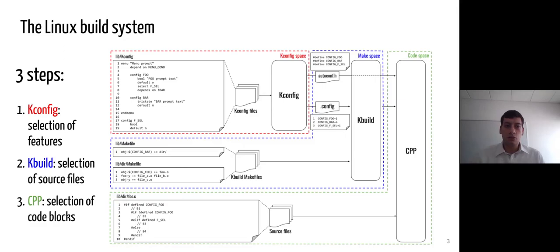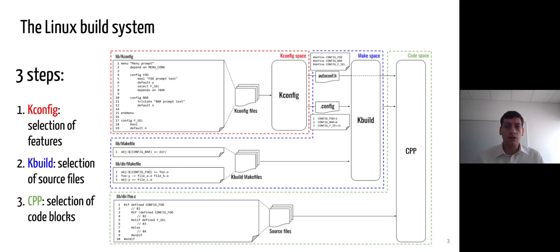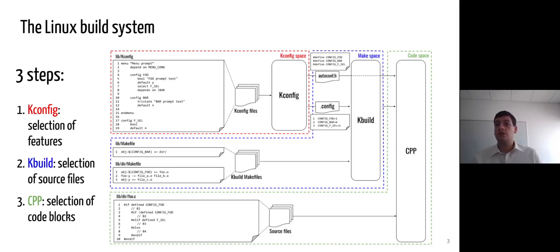The first one is called kbuild, which consists in make files selecting source files, and the second one, the C preprocessor, which selects code blocks in these files. In each one of these three steps, conditions and features are defined to select the different assets — for example, source files in the kbuild, or code blocks in the CPP.